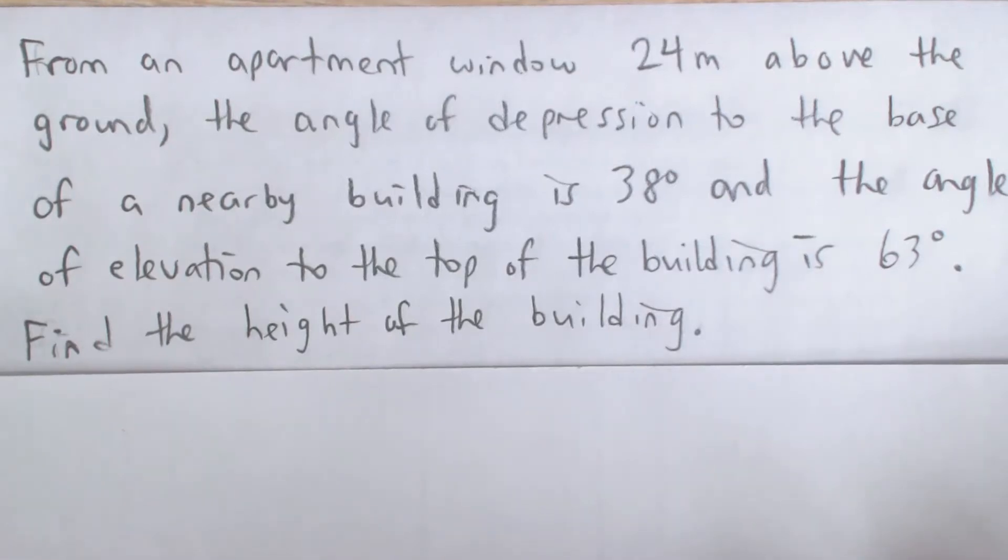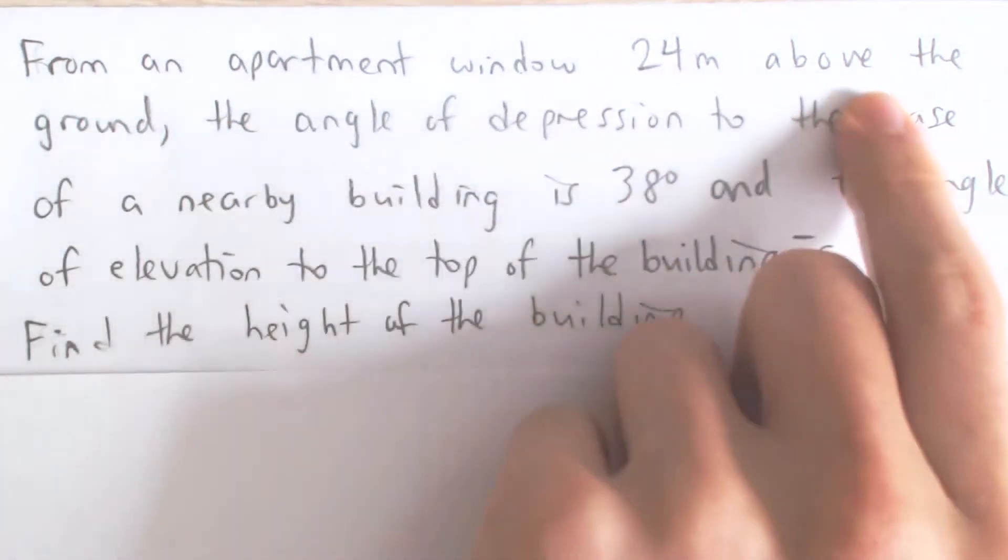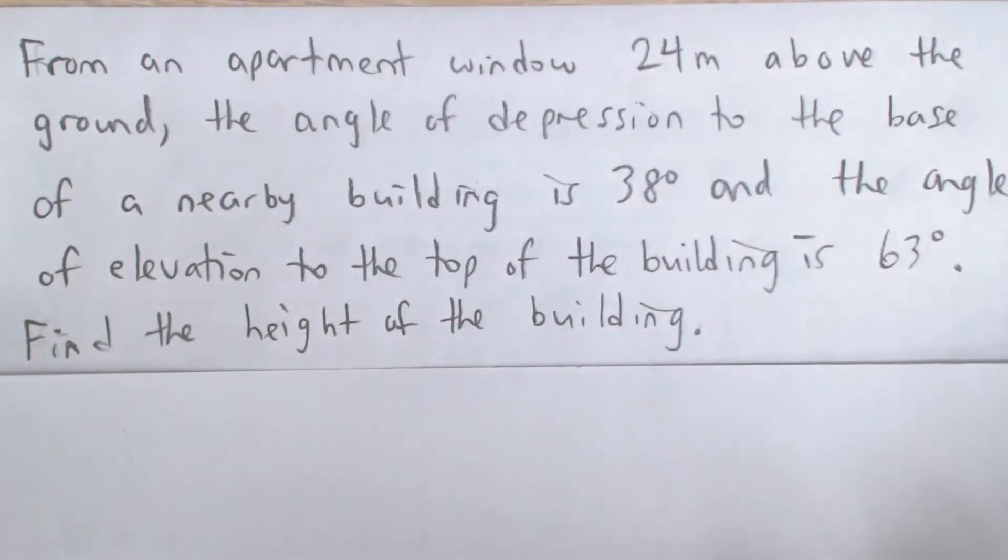Here we have a word problem that says from an apartment window 24 meters above the ground, the angle of depression to the base of a nearby building is 38 degrees and the angle of elevation to the top of that same building is 63 degrees. What we have to do is find the height of the building.